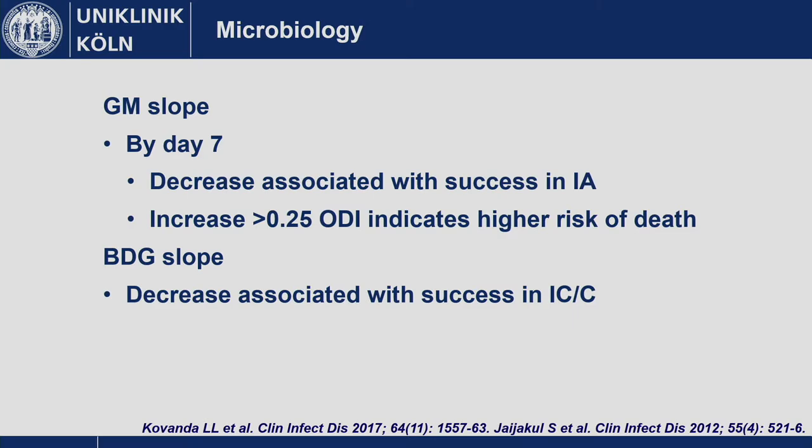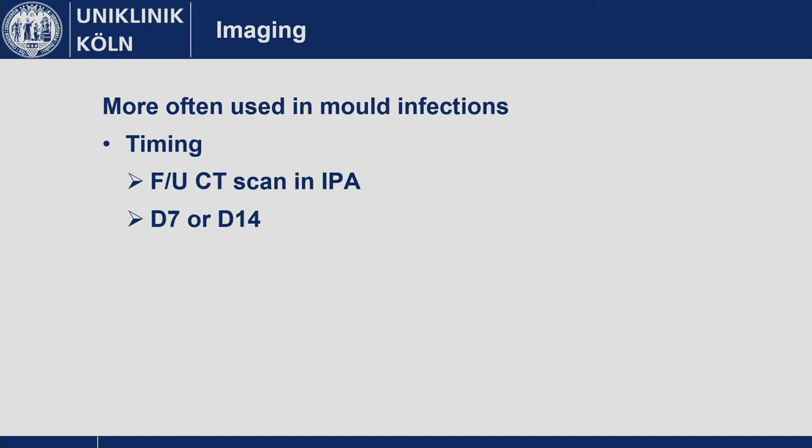We don't know exactly how to react to an increase in GM, but it's one way we should really use to follow treatment success in aspergillosis — and maybe in some other diseases like Fusarium, where GM is also positive. And we have the beta-glucan slope: a decrease is associated with success in invasive candidiasis and candidemia, so that can and should be used there. A paper from the Lewis group provides sufficient evidence to follow the BDG slope.